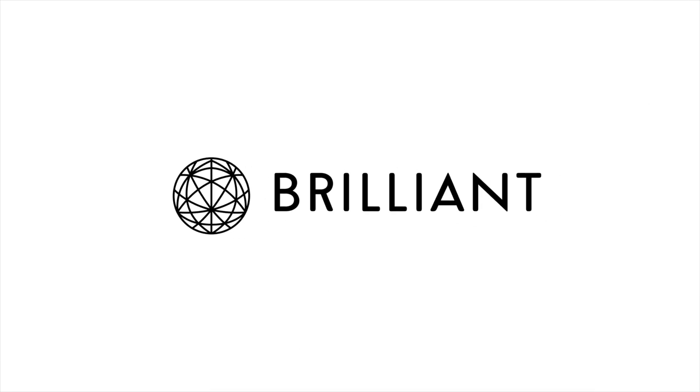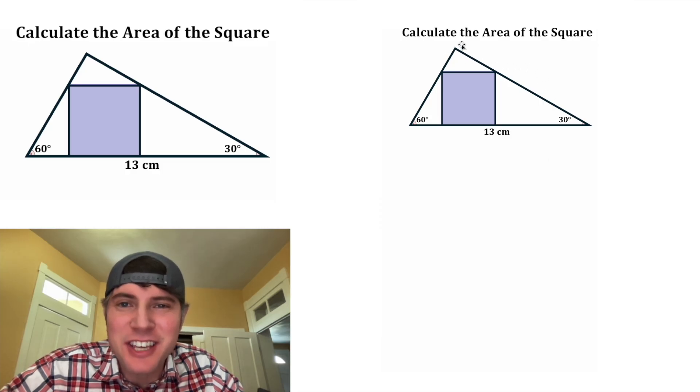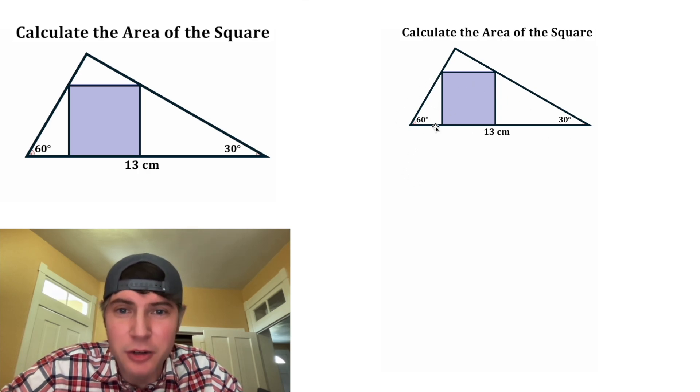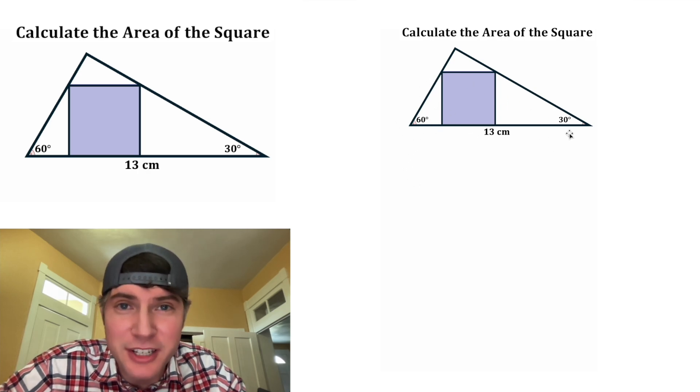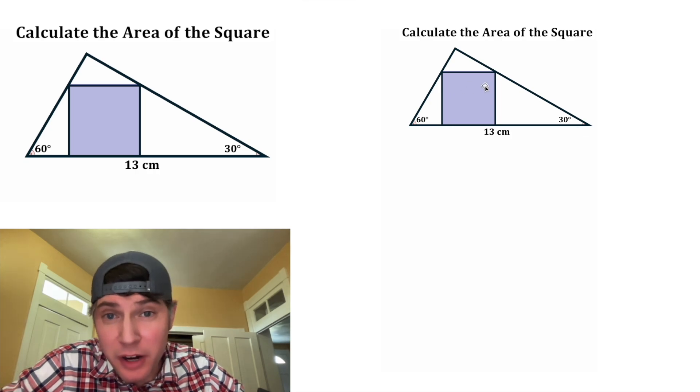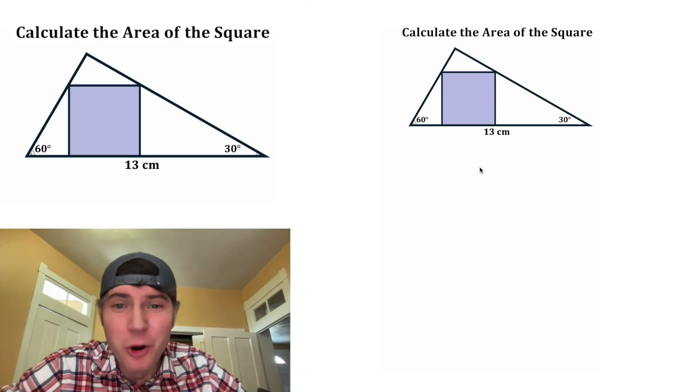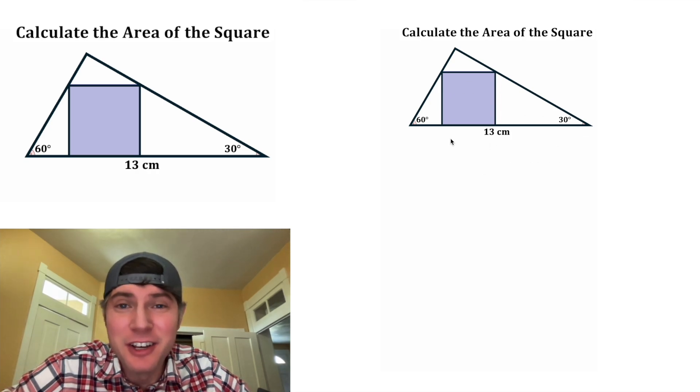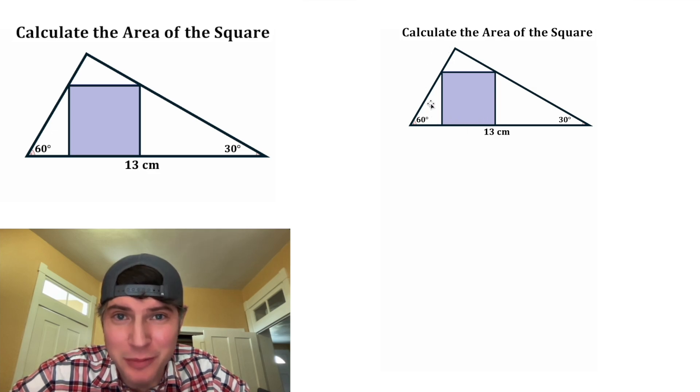This video is sponsored by Brilliant. Hey guys, this looks like a fun one. It says, calculate the area of the square. We're given a 30-60-90 triangle with a hypotenuse of length 13 centimeters, and there's a square inscribed in the triangle. No other information is provided. So that means there can only be one square inscribed like this.